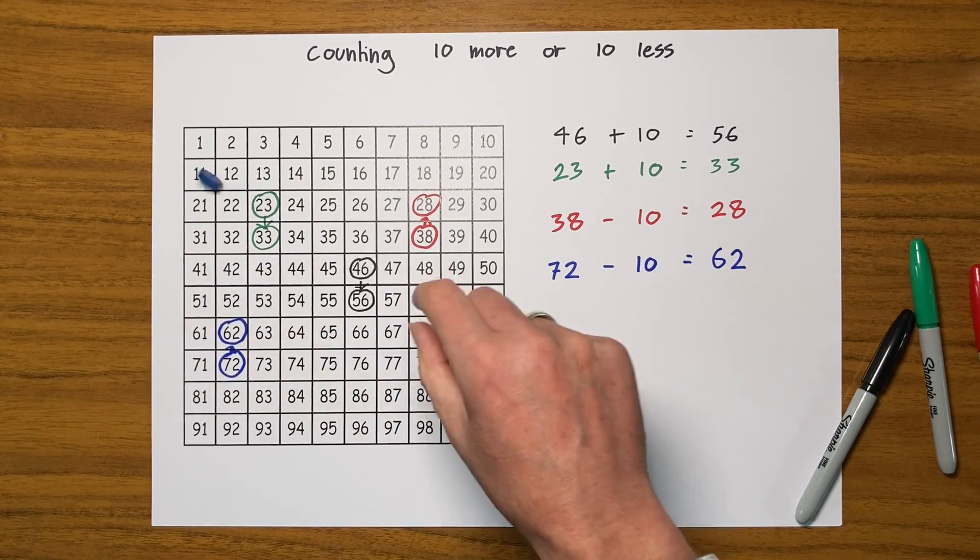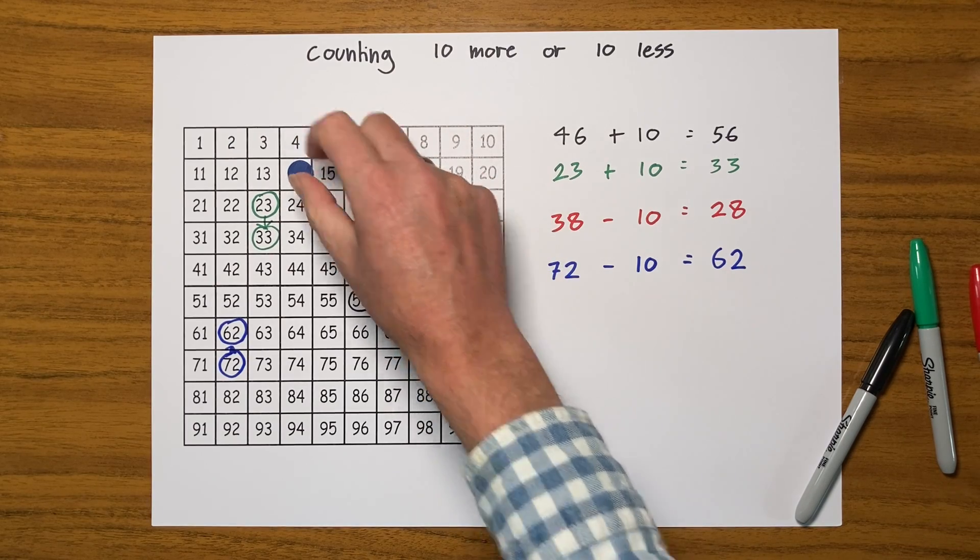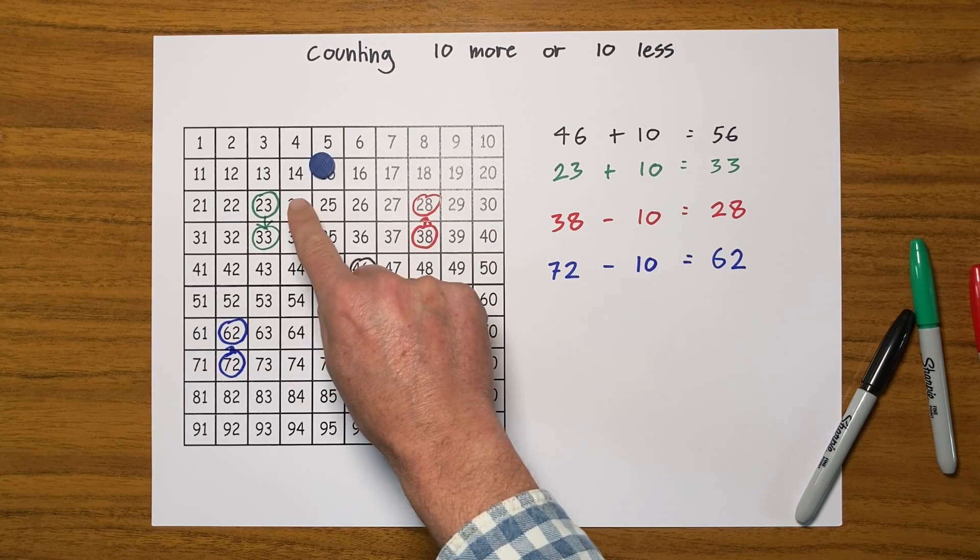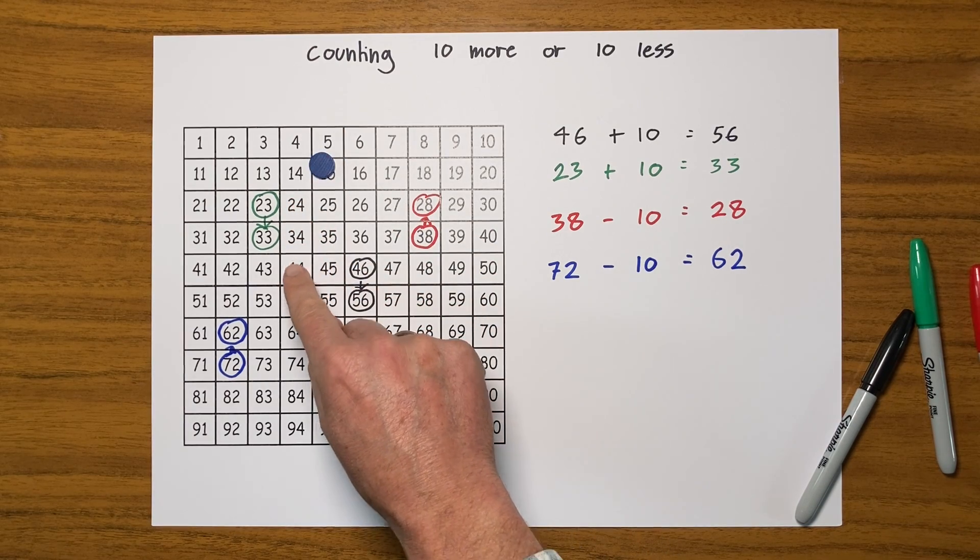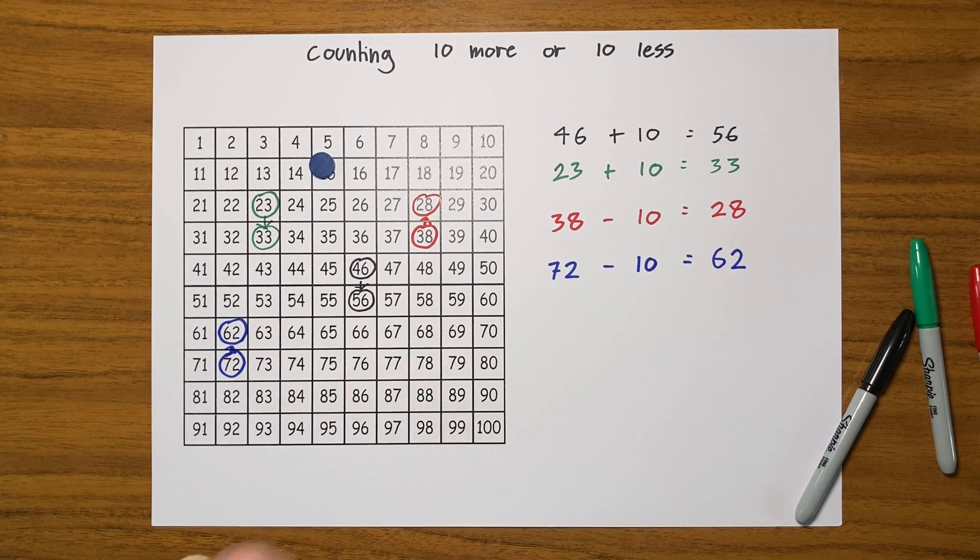Still hasn't, doesn't want to do it. Let's put it here on - I don't know, let's go for 14. So to count up in tens from 14 would be 14, 24, 34, 44, 54, 64, 74, 84.